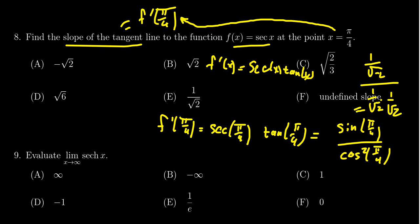Notice that 1/√2 cancels with the top. Since sin(π/4) equals cos(π/4), you're left with the reciprocal of 1/√2. That simplifies to √2. The correct answer is B.